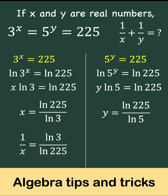And we get also the reciprocal of y to be 1 over y. And we get the reciprocal of the right side of this equation, which is ln of 5 over ln of 225.